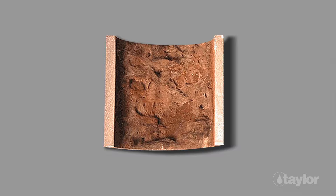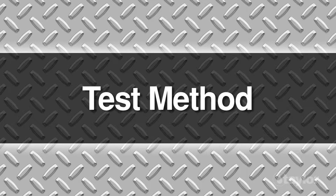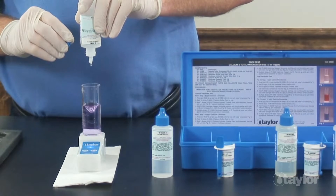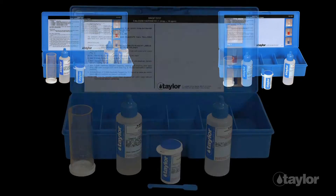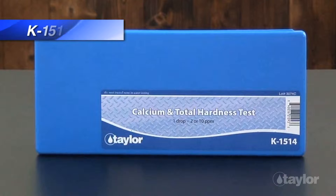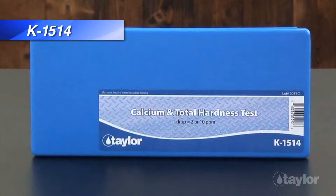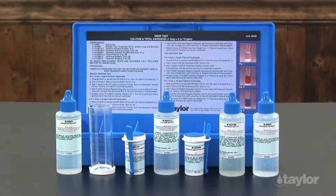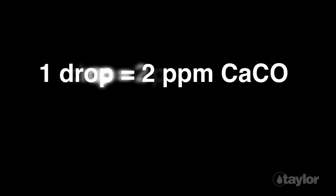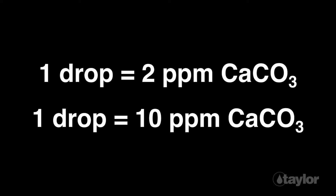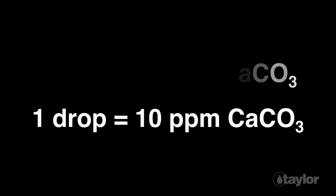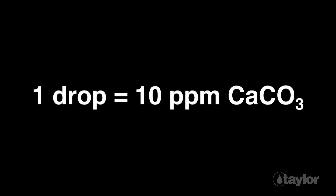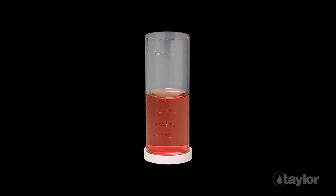For these reasons, calcium and total hardness are often tested in water to assure system reliability and water treatment program performance. It is critical to test water hardness on a regular basis, and Taylor offers several kits to help you monitor this parameter. For this demonstration, we will be using K1514, a simple drop test for determining calcium and total hardness. The K1514 allows for two equivalencies: one drop equals two parts per million and one drop equals 10 parts per million hardness as calcium carbonate. We will be demonstrating the one drop equals 10 parts per million method in this video.